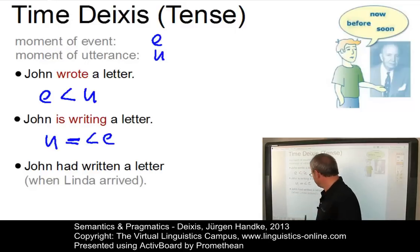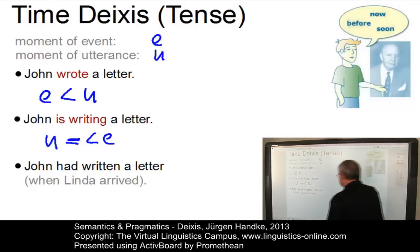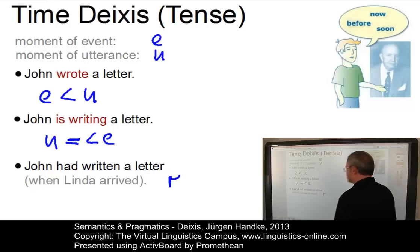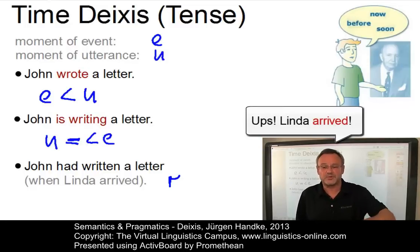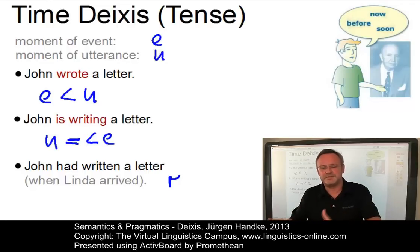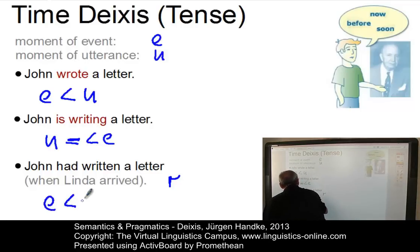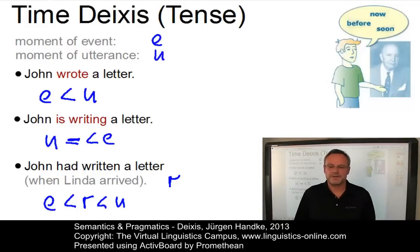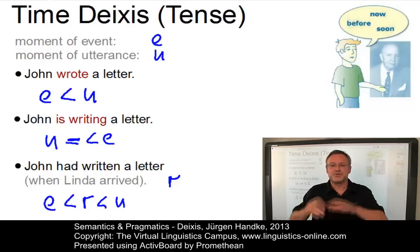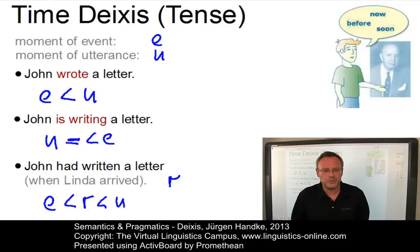The third utterance, 'John had written a letter when Linda arrived', uses a third time r — the reference time in the past when Linda arrived. The event e precedes the reference time r, which in turn precedes the moment of utterance u. While the precedence relation between e and r is non-deictic — it is independent of the speaker's 'now' — there is a deictic temporal relationship between u and r.